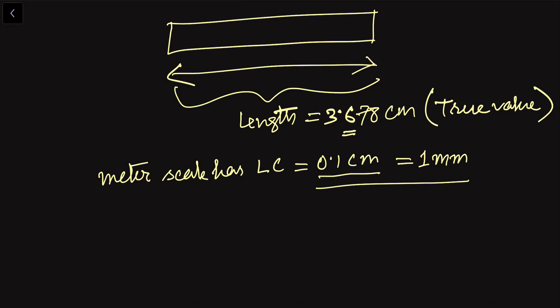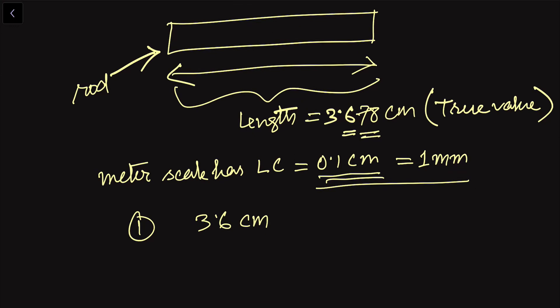When we measure the rod with a meter scale, we might get 3.6 centimeters — correct as per the meter scale, but we are missing the 0.078 centimeters of extra length. Because the least count is 0.1 centimeters, the meter scale cannot read below this value, causing a least count error.